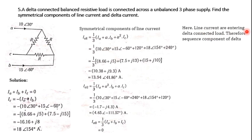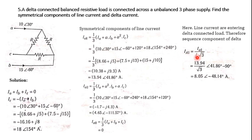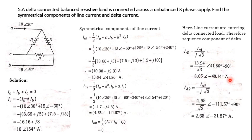To find the sequence components of the delta phase current: capital Ia1 = Ia1_line / (j√3), giving 8.05∠−48.14° A. For capital Ia2, it equals Ia2_line / (minus j√3) — since minus j is minus 90°, when moved to numerator it becomes plus 90°, giving 2.68∠−21.57° A. Capital Ia0 is zero. Thank you.